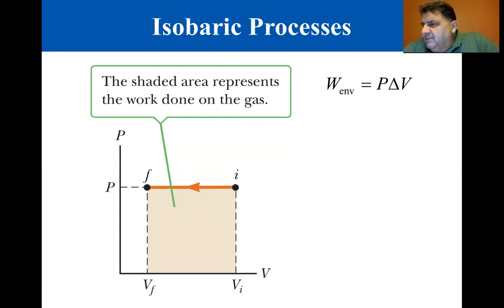The figure shows the PV diagram of an isobaric compression. Again, the magnitude of the work done on the gas is just the area under the path in its PV diagram, height times length or P times delta V.